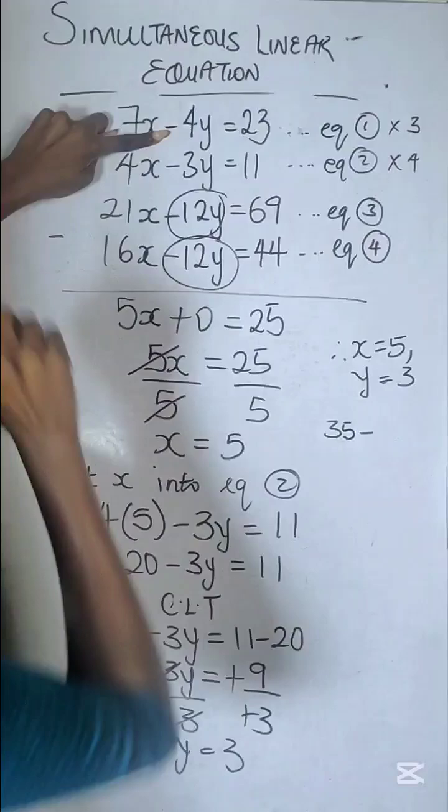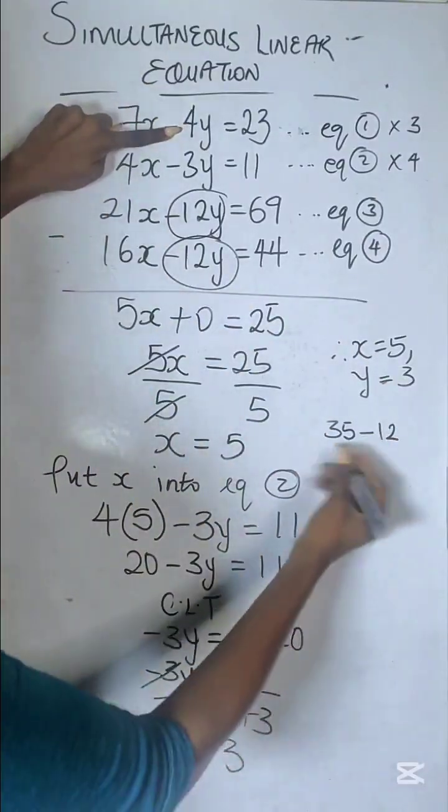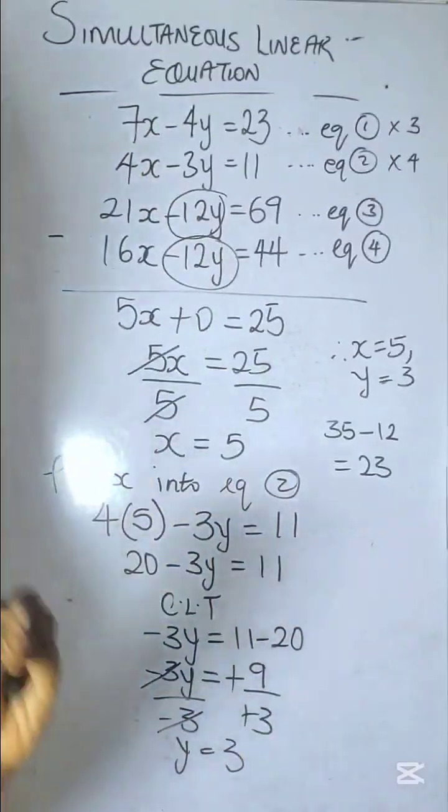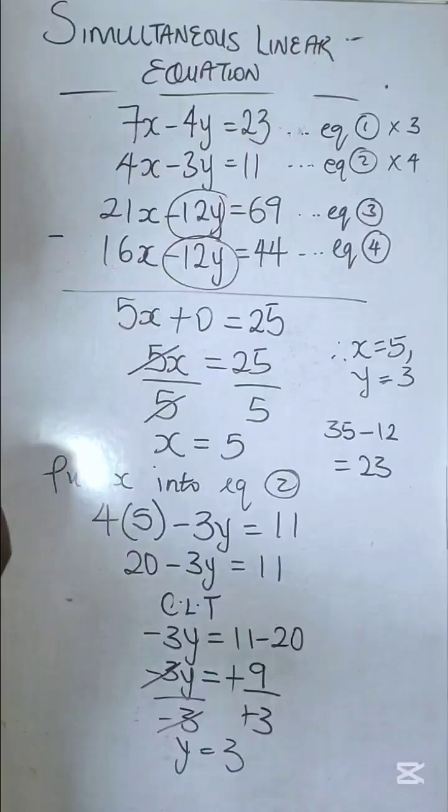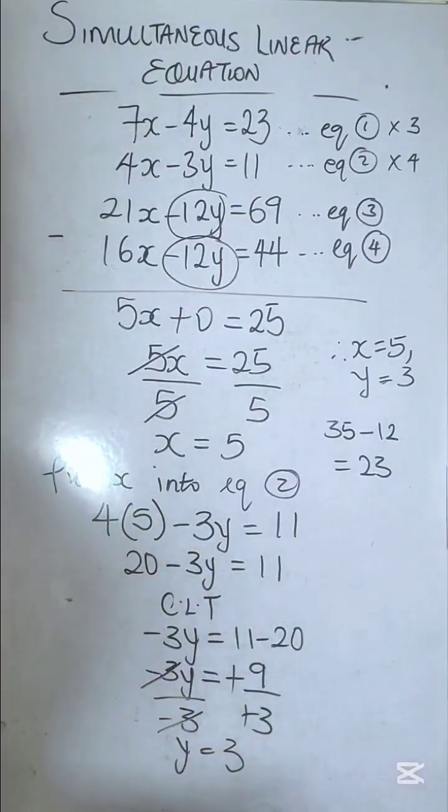Minus 4 times 3 is 12. So this gives you 35 - 12 = 23. Now this tells you that you are correct, because your values give you the equation as it was stated from the beginning.